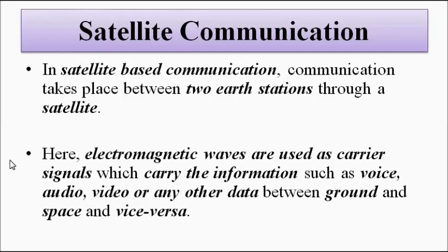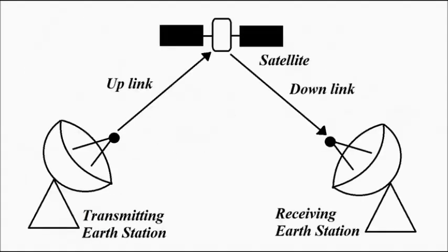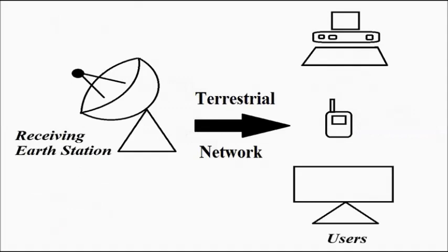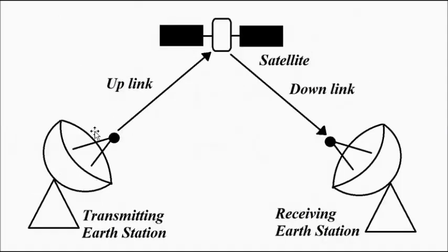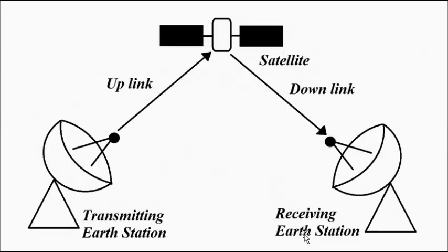In satellite-based communication, communication takes place between two earth stations — a transmitting earth station and a receiving earth station — which serve as the connecting link between different end-user devices. Electromagnetic waves are used as carrier signals carrying information in any form: audio, video, numbers, text, etc. The ground stations and the satellite together serve as the connecting link.